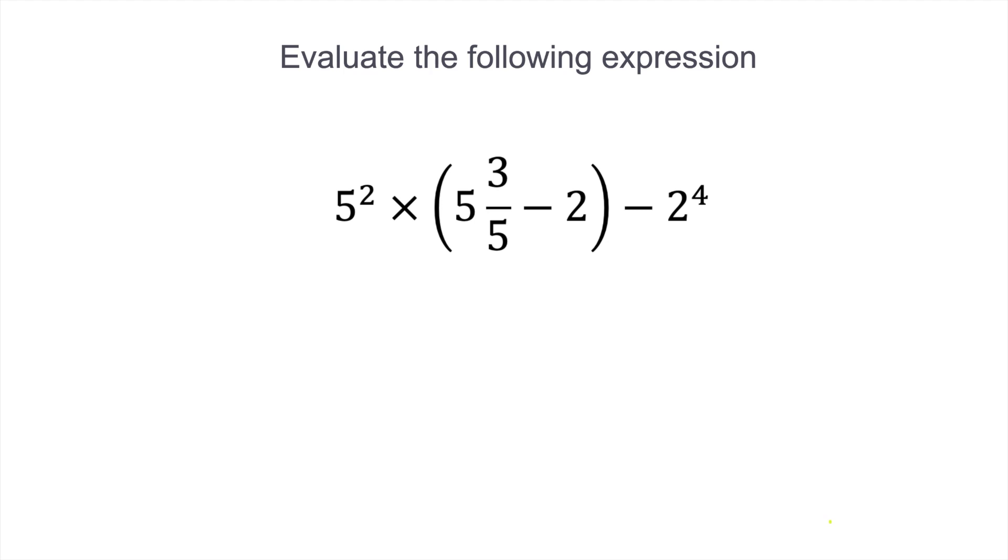Welcome to the Math Review. So in this question, we're being asked to evaluate the following expression. And it says 5 squared, or 5 to the second power, times 5 and 3 fifths minus 2, minus 2 to the fourth power.